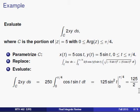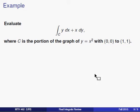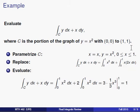Moving on to the second example. We have an integral of this form, y dx plus x dy, where the curve we're integrating over is the portion of the graph y equals x squared with C running from (0,0) to (1,1). To evaluate this, we need to parametrize first.